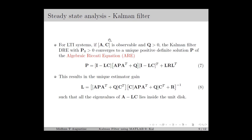Similar results can be obtained for the Kalman filter as well. In general, for LTI systems with Kalman filter, if the pair (A, C) is observable and the variance matrix Q is positive definite, then the DRE with initial matrix P0 converges to a unique positive definite solution P of the ARE as given in equation 7. This results in a unique estimator gain L as given in equation 8, such that all eigenvalues of A minus LC lie inside the unit disk. Compared to the DRE from previous lectures, the ARE is obtained by replacing Pk by P, Lk by L, and Ak, Ck, Qk by A, C, and Q respectively. So the ARE is basically the steady state DRE.